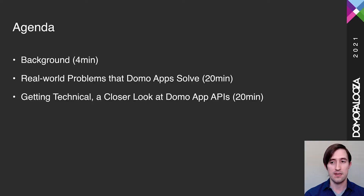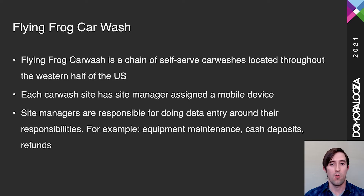Our agenda today: we're going to start off with a little background on what Flying Frog Car Wash's problems were and how we used the Domo app platform and all its APIs to address that problem. Then we'll dive into getting technical and look at each of the Domo APIs with specific developer tips. Flying Frog Car Wash is a chain of self-serve car washes located mostly throughout the western half of the U.S.